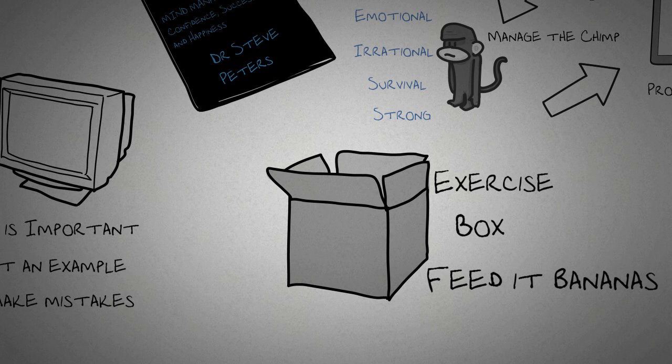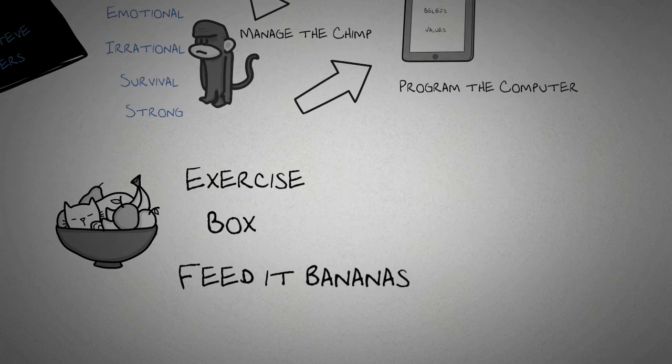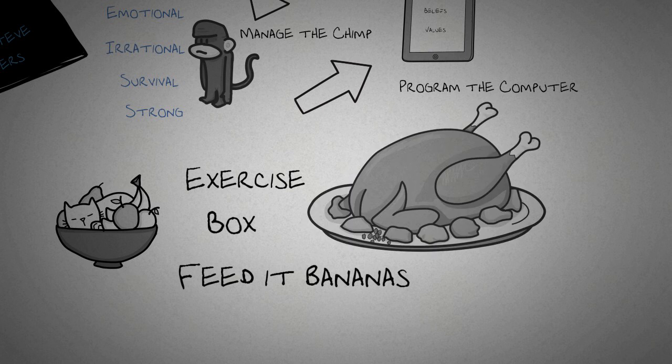Let's say for instance that there is a lovely chocolate cake on offer and your chimp thinks you should eat it, but you know as the human that you are trying to manage your weight and your decision would be to eat something more healthy. You could feed your chimp a banana and say, if I manage not to eat chocolate cake for the next five days, then I can treat myself to a guilt-free Sunday dinner.